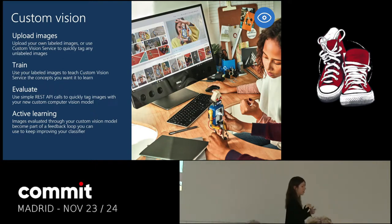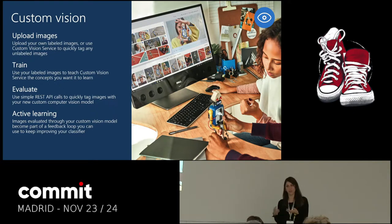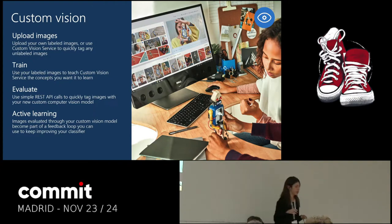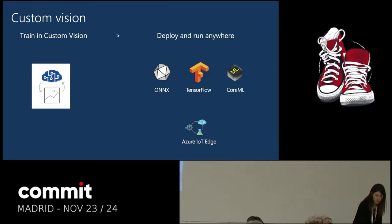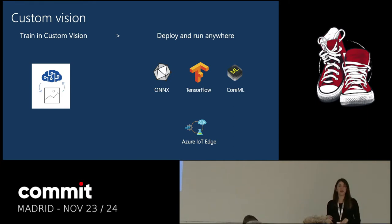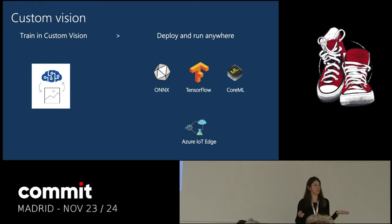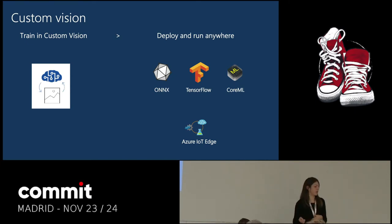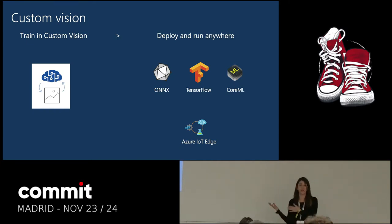It's all done visually — you still don't have to know about machine learning or what the algorithms are in the background. You just upload images, tag them, click on train, and that's it. One good thing about Custom Vision is you can use the services on the cloud, or you can export them to other formats like TensorFlow or ONNX, and then use them on IoT devices, on-premise devices, or other kinds of devices. It doesn't have to be running on the cloud necessarily.